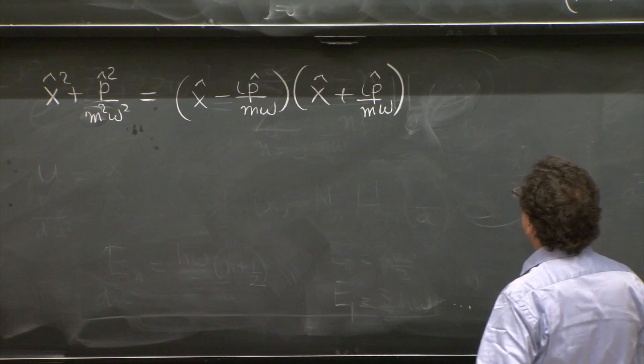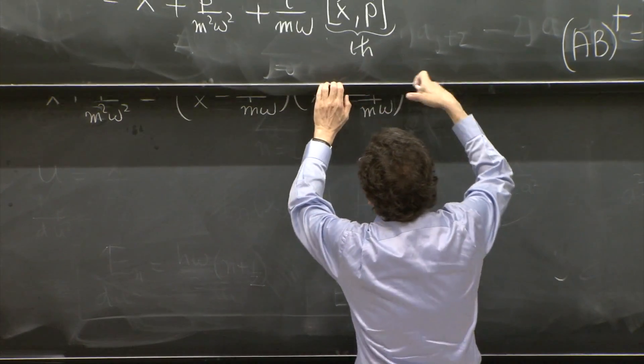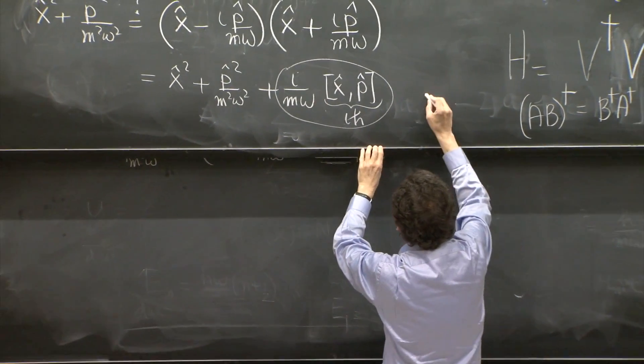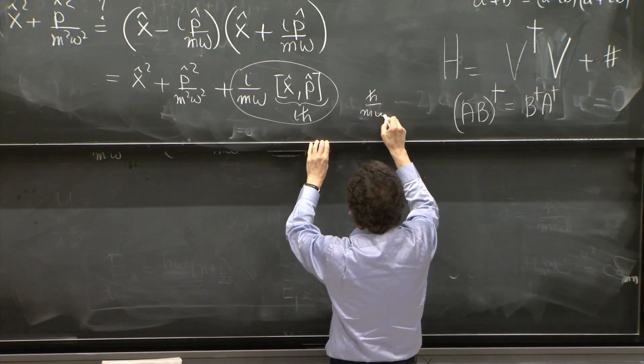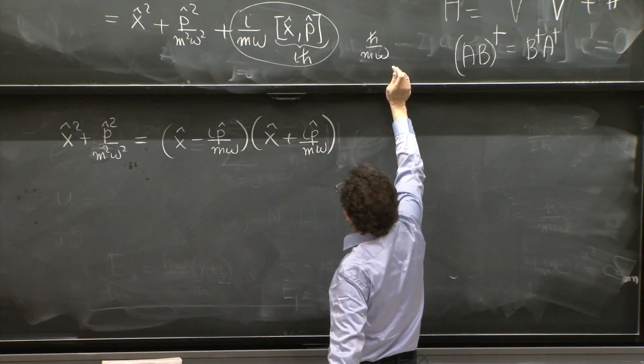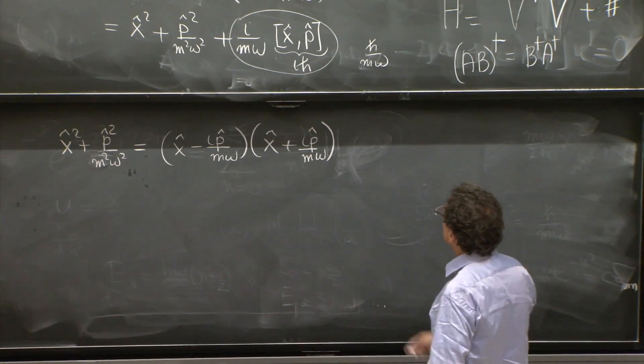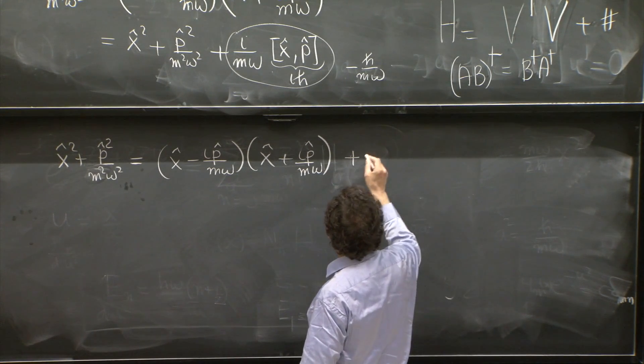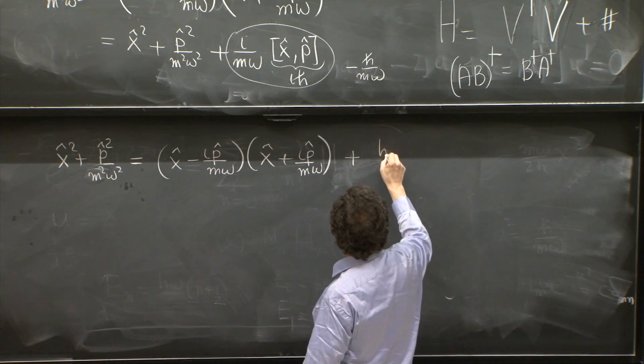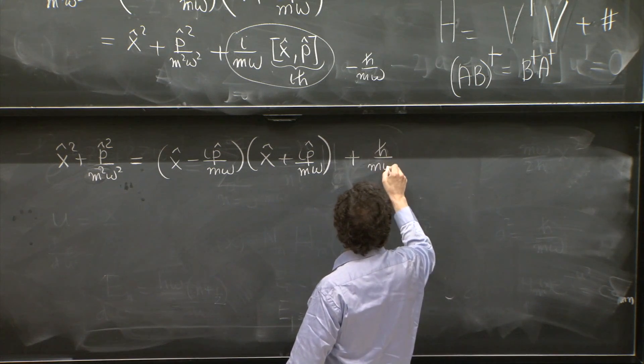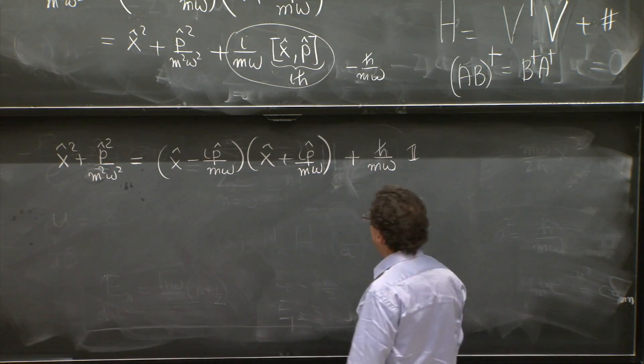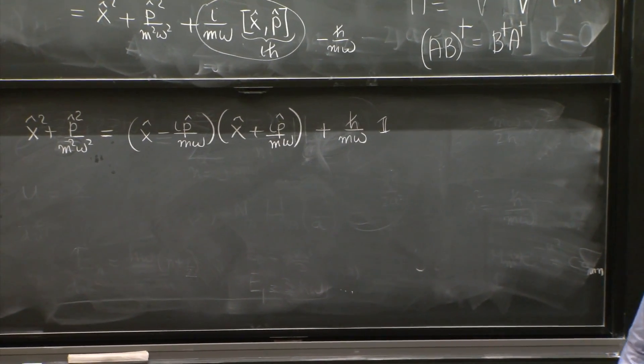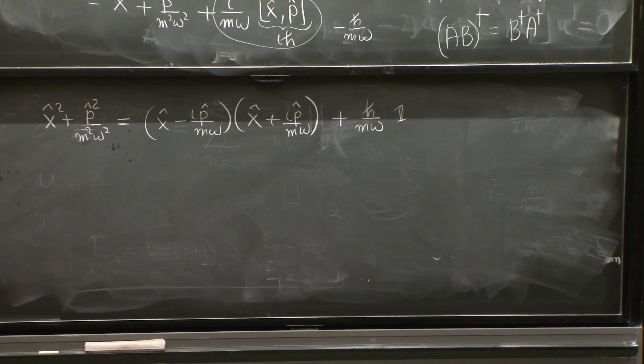And then from this whole term, i with i is minus. So it's h bar over m omega. So I'll put it in, it's a minus h bar over m omega. So here is plus h bar over m omega times the unit factor, if you wish. OK.